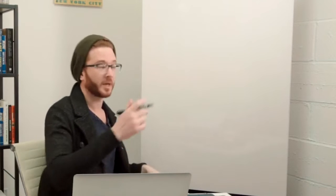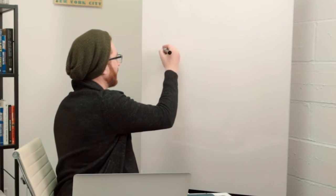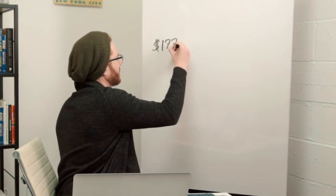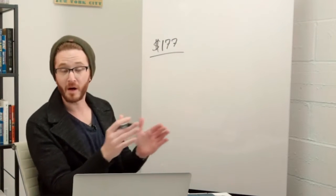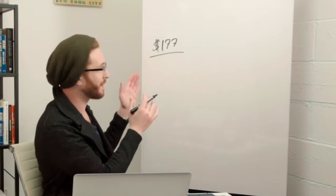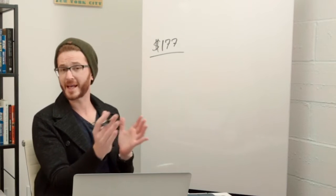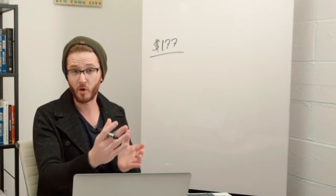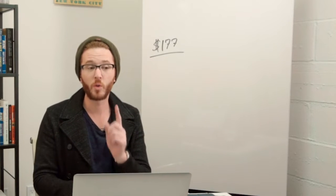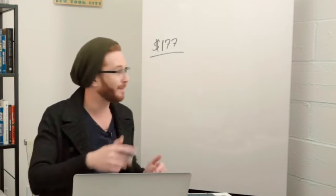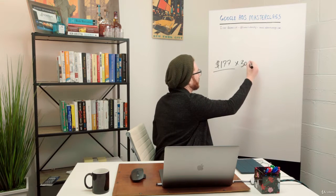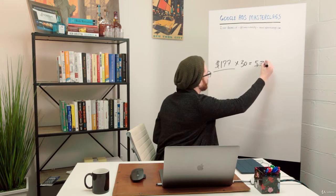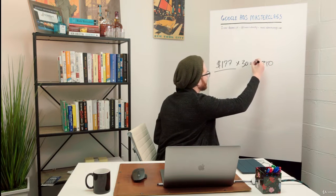Say for example, I have a daily budget of $177. The average amount of days in a month - what you're telling Google is that this is what I want to spend per day and Google will say, we get that, we might spend a little bit more, you might spend a little bit less, but we will hold ourselves to that multiplied by 30. So if I take $177 and multiply that by 30, what do we get? $5,310, I believe.